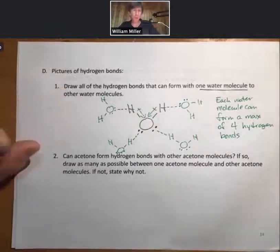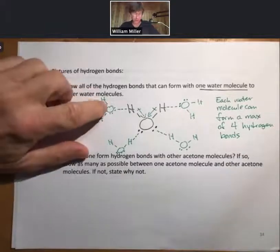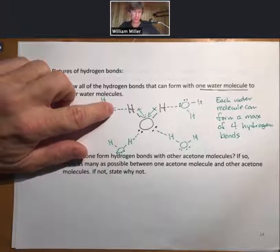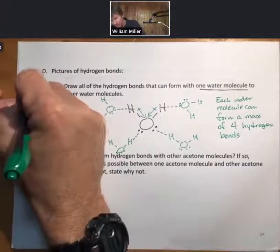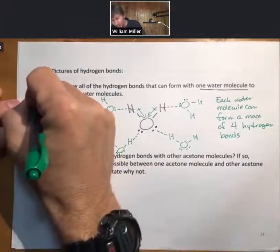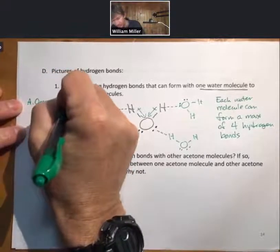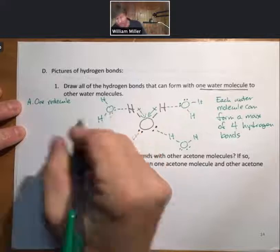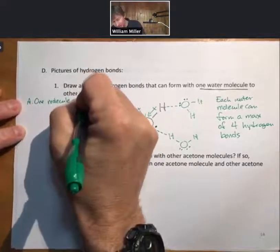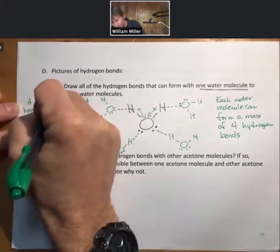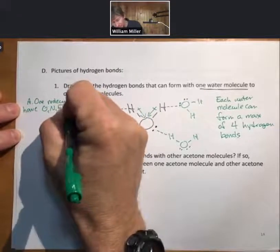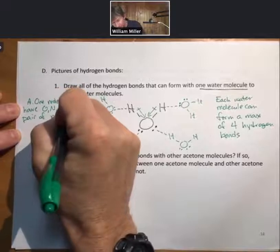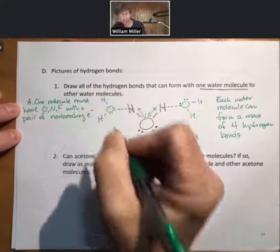And to form a hydrogen bond, one of the molecules has to have oxygen, nitrogen, or fluorine with a pair of non-bonding electrons. So A, one molecule must have oxygen, nitrogen, or fluorine with a pair of electrons, non-bonding electrons, which they almost always do.